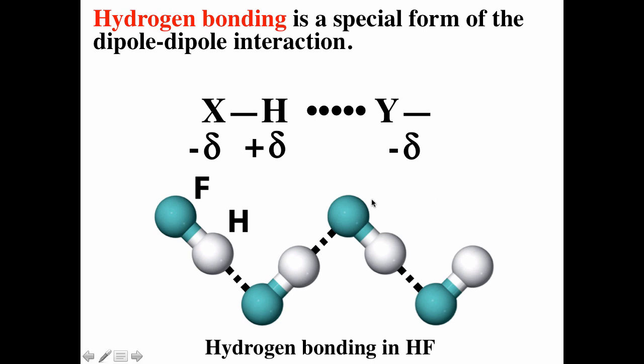In HF, fluorine is much more electronegative than hydrogen, making this a very polar bond. For diatomics, if the bond is polar, the molecule is polar. Fluorine has a partial negative charge and hydrogen has a partial positive charge. The hydrogen part of one molecule is attracted to the fluorine side of another molecule. We call it hydrogen bonding, but it's mainly electrostatic interaction — not a covalent bond.